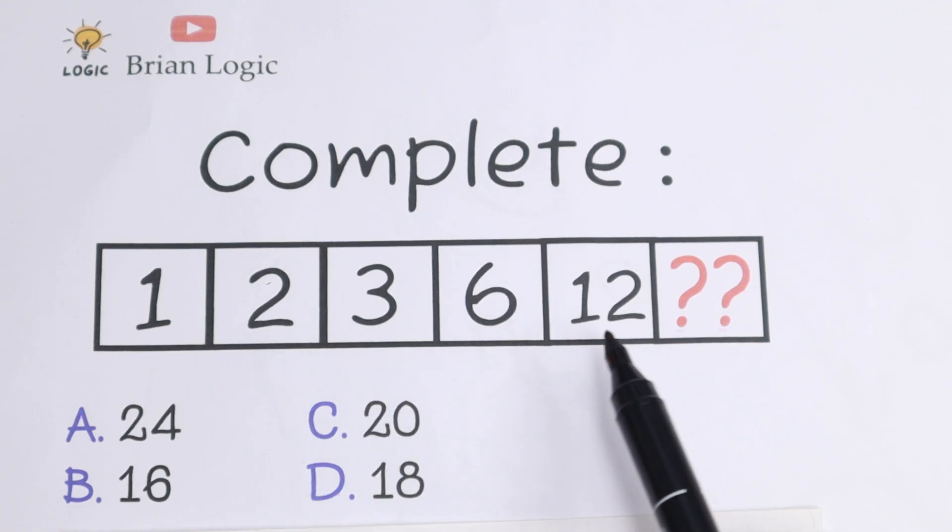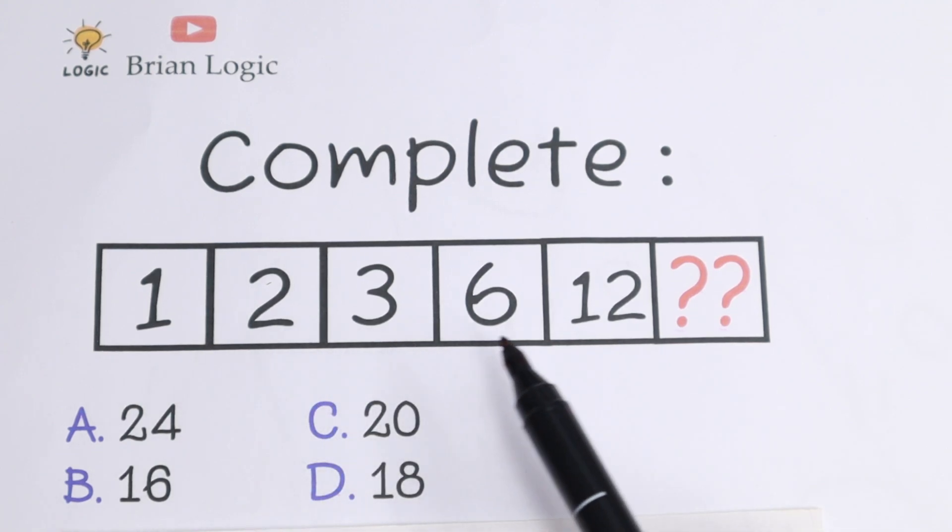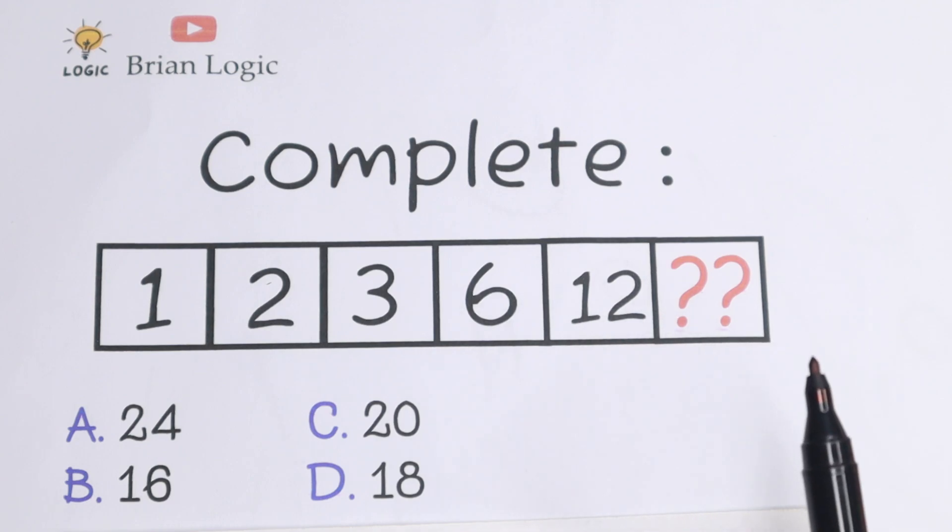We need to complete this numeric theory. We have 1, 2, 3, 6, 12 and we need to find the last number. Right here we have a lot of options: A, B, C and D.